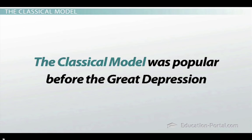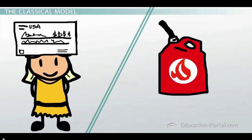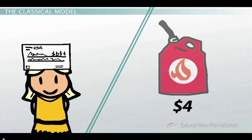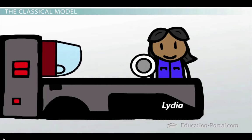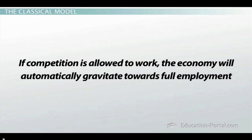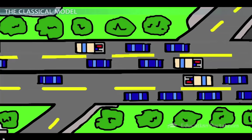The classical model was popular before the Great Depression. It says that the economy is very free-flowing and prices and wages freely adjust to the ups and downs of demand over time. In other words, when times are good, wages and prices quickly go up, and when times are bad, wages and prices freely adjust downward. The major assumption of this model is that the economy is always at full employment, meaning that everyone who wants to work is working and all resources are being fully used to their capacity. If competition is allowed to work, the economy will automatically gravitate toward full employment, or what economists call potential output — just like the expressway at an average speed of 55 miles per hour.